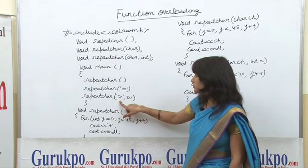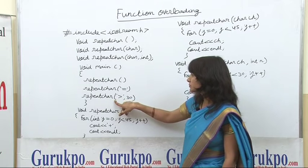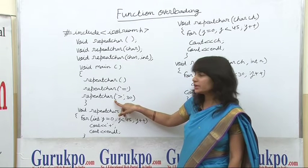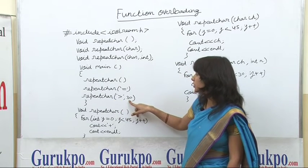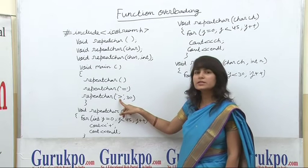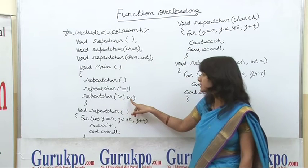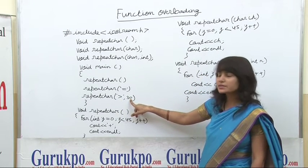The third repeat_character function is called here passing two arguments: the first is a character type, and the second is the integer number 30.